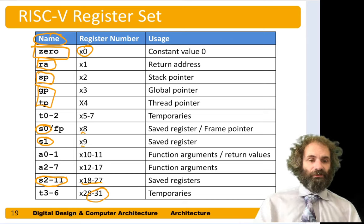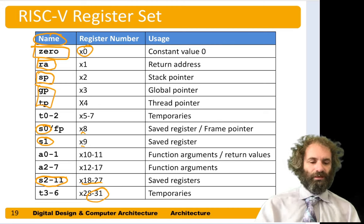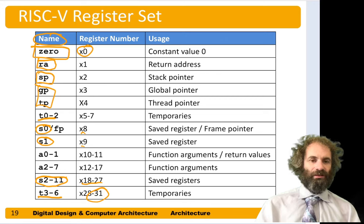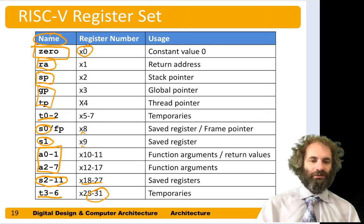The S registers are variables that need to hold their value when you return from a function call. The temporary registers, T0 through T2 and T3 through T6, are used for holding temporary results — for instance, when we did A equals B plus C minus D, we needed a temporary register to hold an intermediate result. The A registers are arguments, used for values passed to a function and values returned from a function call.